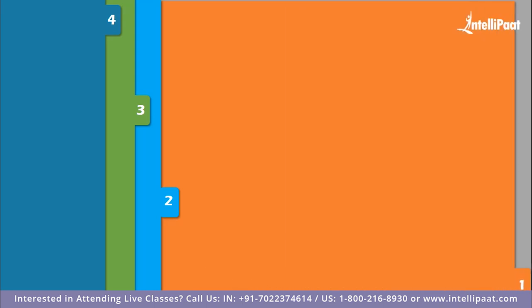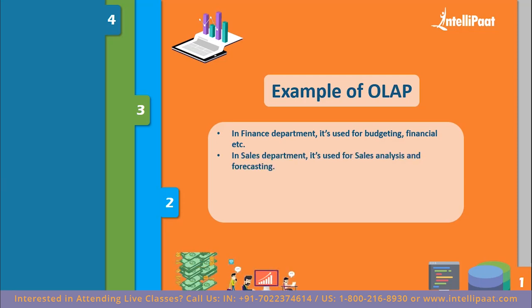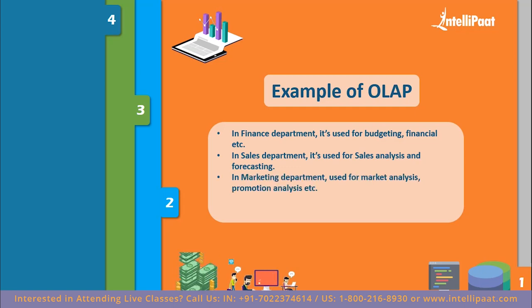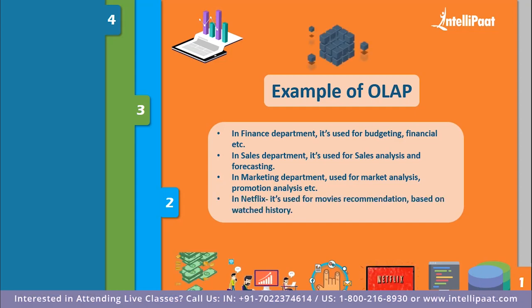Now let's discuss examples of OLAP. OLAP is used in finance departments for applications such as budgeting, financial performance analysis, activity-based costing allocation, and financial modeling. In the sales department, OLAP is used for sales analysis and forecasting. In marketing departments, OLAP is used for marketing research analysis, sales forecasting, customer analysis, promotions analysis, and market or customer segmentation. All of these applications provide managers and decision makers the information needed to make effective decisions about an organization's strategic direction. In Netflix, movies are recommended to users based on their previously watched history, and a percentage match is shown. Similarly, in e-commerce companies like Myntra, users get recommendations for apparel, accessories, and other items based on their previous purchases.